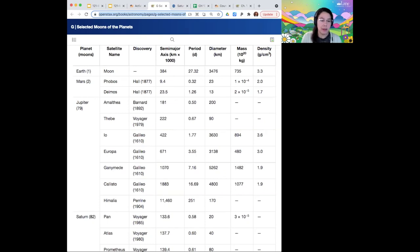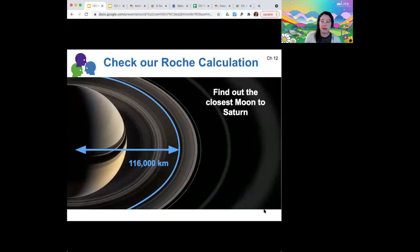And then 139,000 kilometers. Yes. That's also outside the Roche limit. Cool. So that it gives us confidence that this Roche limit thing actually means something, right? If there were moons inside the Roche limit, then how did they survive the tidal forces?